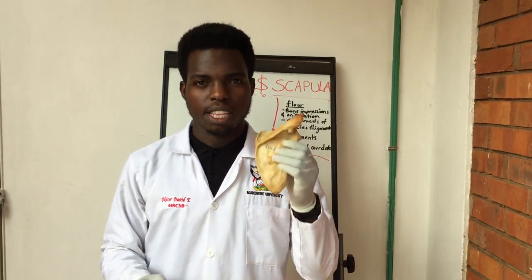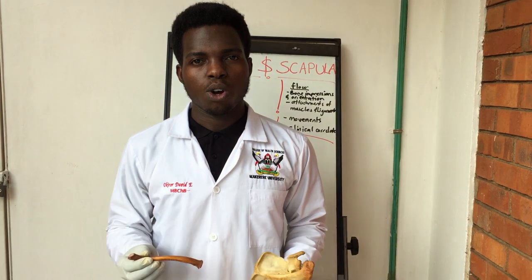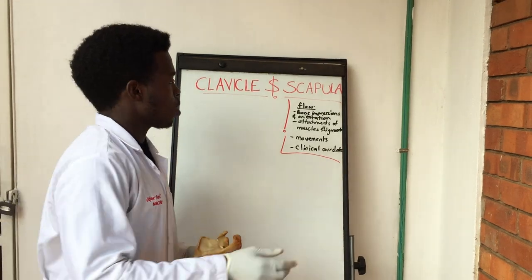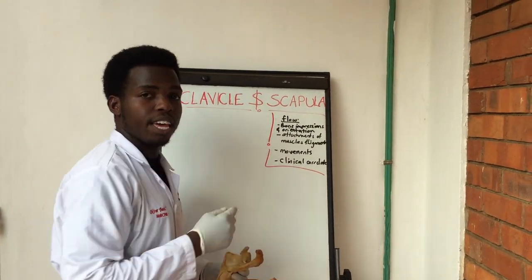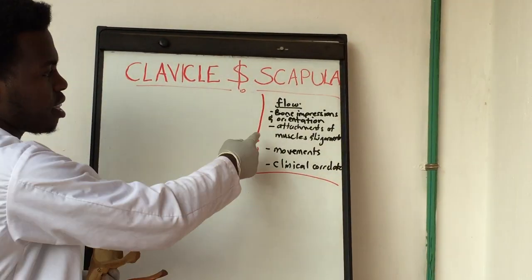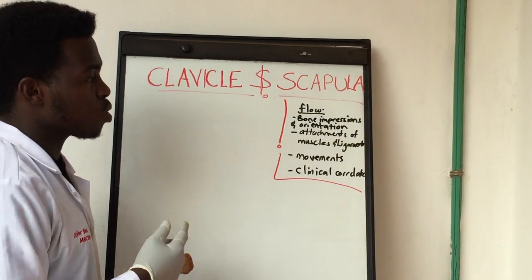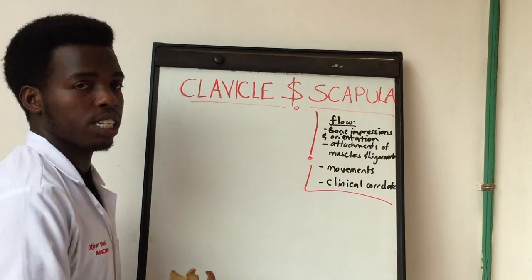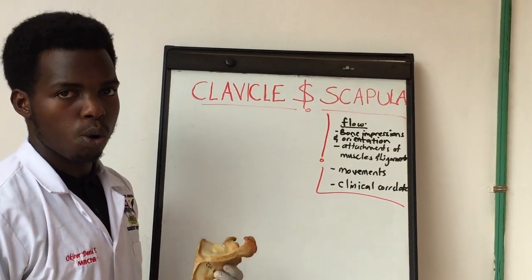Hello everyone, welcome. Like and subscribe and hit the notification bell. Today we are going to look at the scapula and the clavicle — both are bones of the upper limb. We will look at the bone impressions and their orientation, attachments for muscles and ligaments, the movements associated with those bones, and lastly the clinical correlates with those two bones.